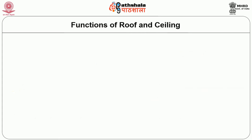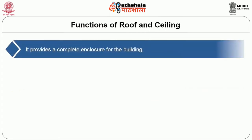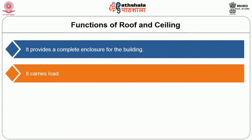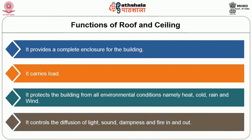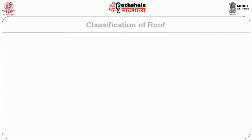Factors for roof selection include: type of building, type of foundation, load of the building, exposure to light, air circulation, aesthetics and economy. The functions of roof and ceiling include providing a complete enclosure for the building, carrying loads, protecting the building from all environmental conditions namely heat, cold, rain and wind, and controlling the diffusion of light, sound, dampness and fire.